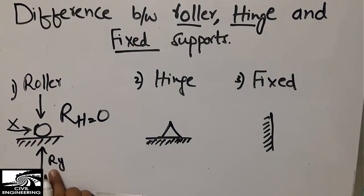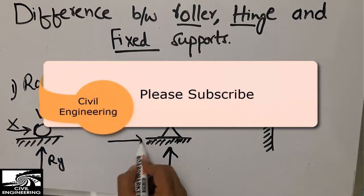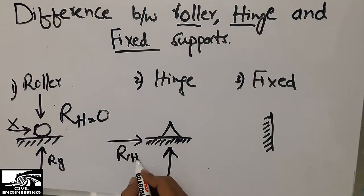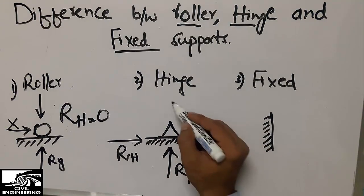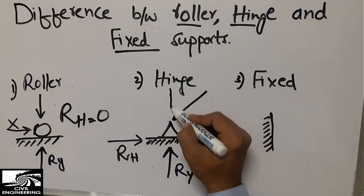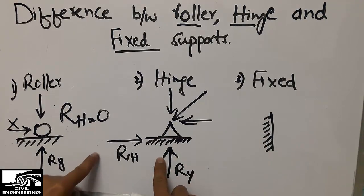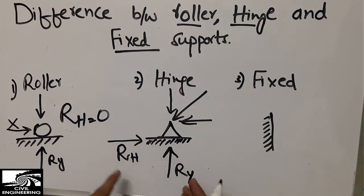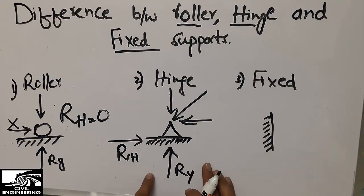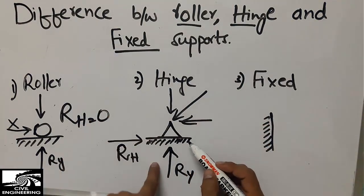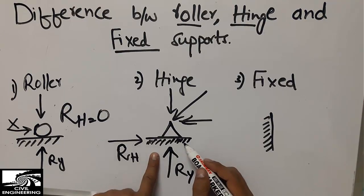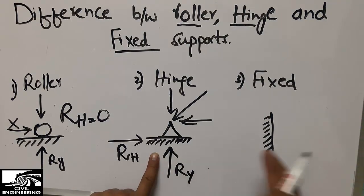Coming to the second one, the hinge support can resist both vertical as well as horizontal loads — Ry and Rx. For example, if a load is coming at an angle, it has both vertical and horizontal components, and the hinge support provides resistance in both directions. It can resist translation in both directions, but it cannot resist moment — if a moment is coming, it will not resist it.